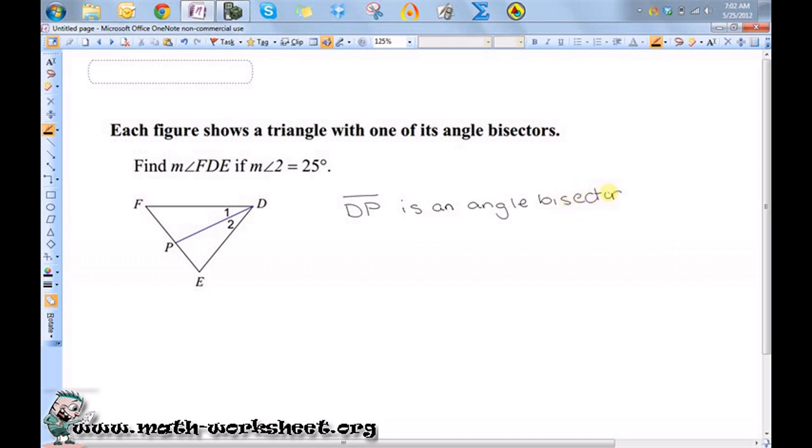Because this is an angle bisector, these two angles are equal to each other, and each individually are equal to one half the measure of this angle here.